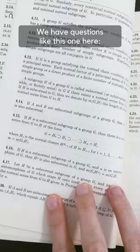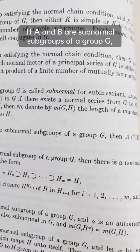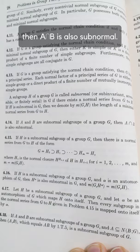We have questions like this one here. If A and B are subnormal subgroups of a group G, then A intersect B is also subnormal. Not totally clear what the question is, but here's the solution.